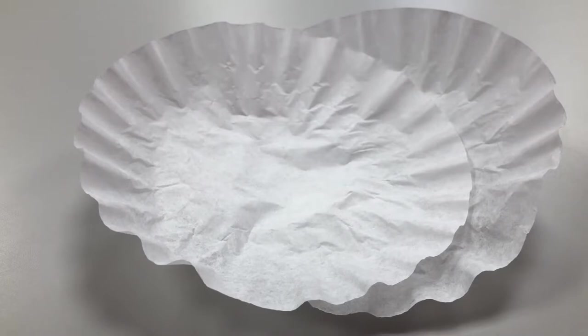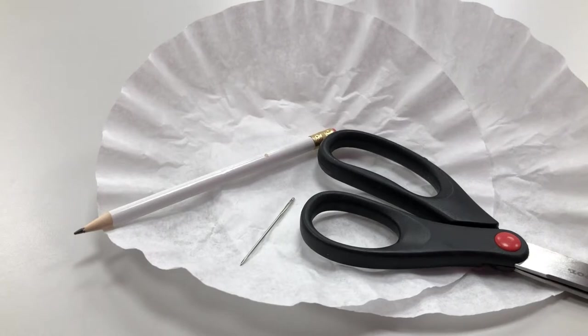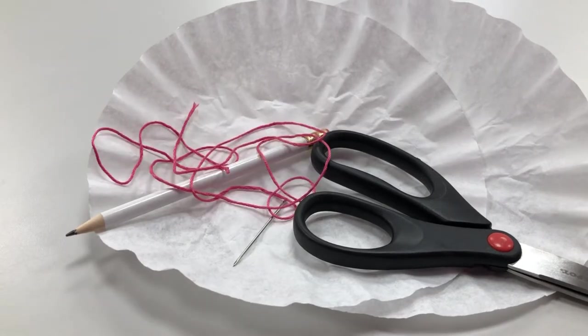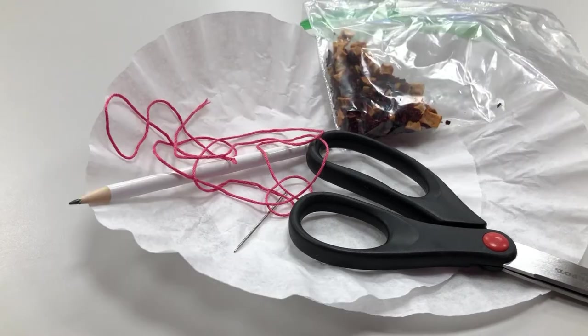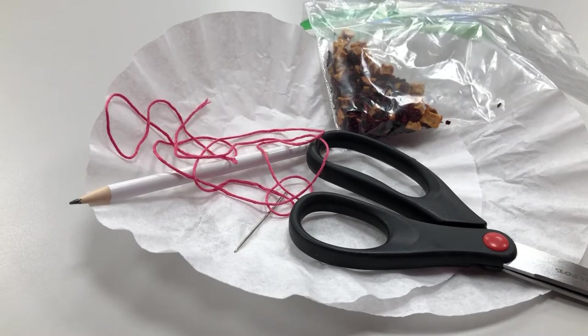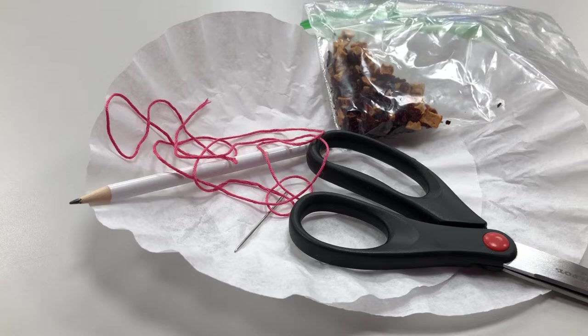For this craft you'll need two coffee filters, a pair of scissors, a pencil, an embroidery needle, about a yard of embroidery floss, and some loose leaf tea. Today we're using a raspberry tea just because I think it's tasty and also it feels like a good one for a heart because it's kind of a pink colored tea.